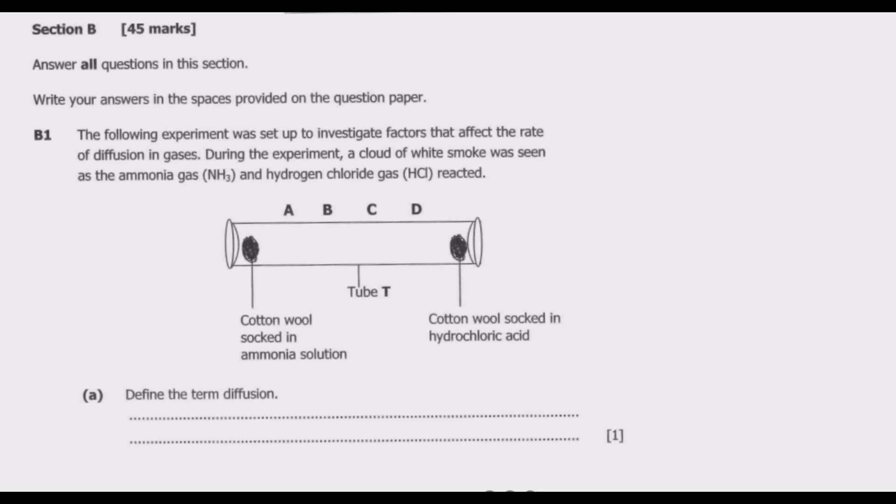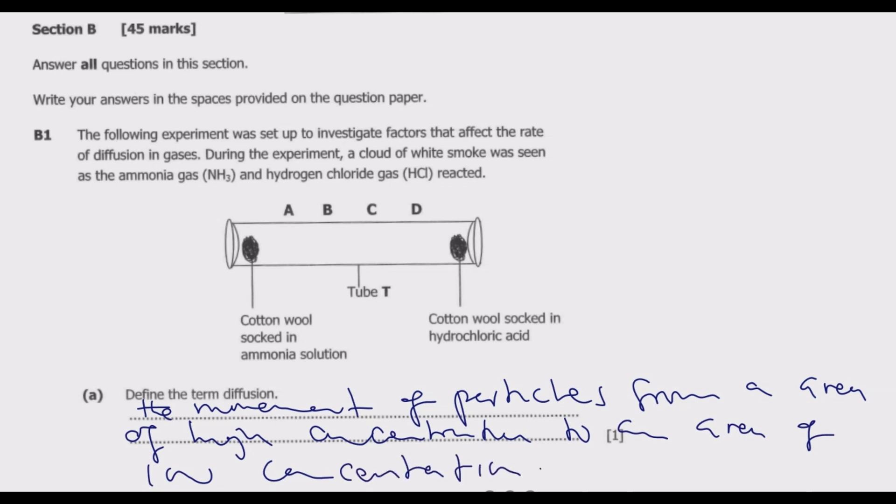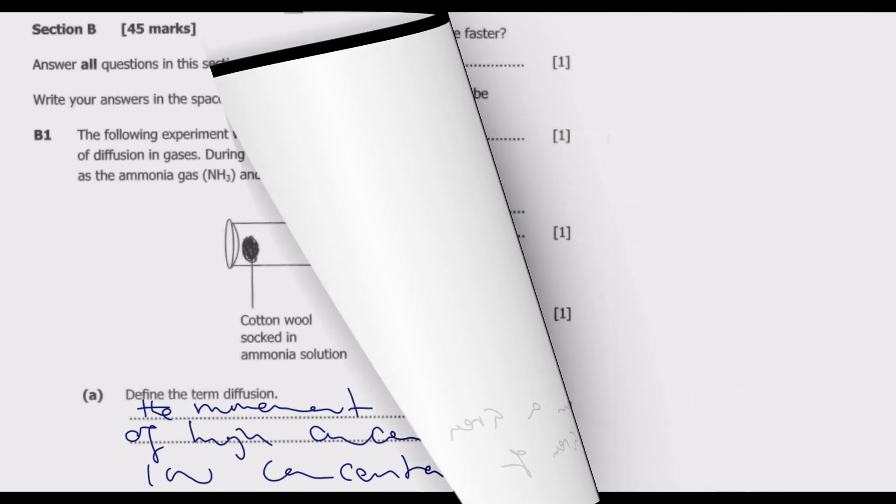So basically when we are talking about diffusion, what are we basically talking about? It is the movement of particles from an area of high concentration to an area of low concentration. That is basically the definition of diffusion.